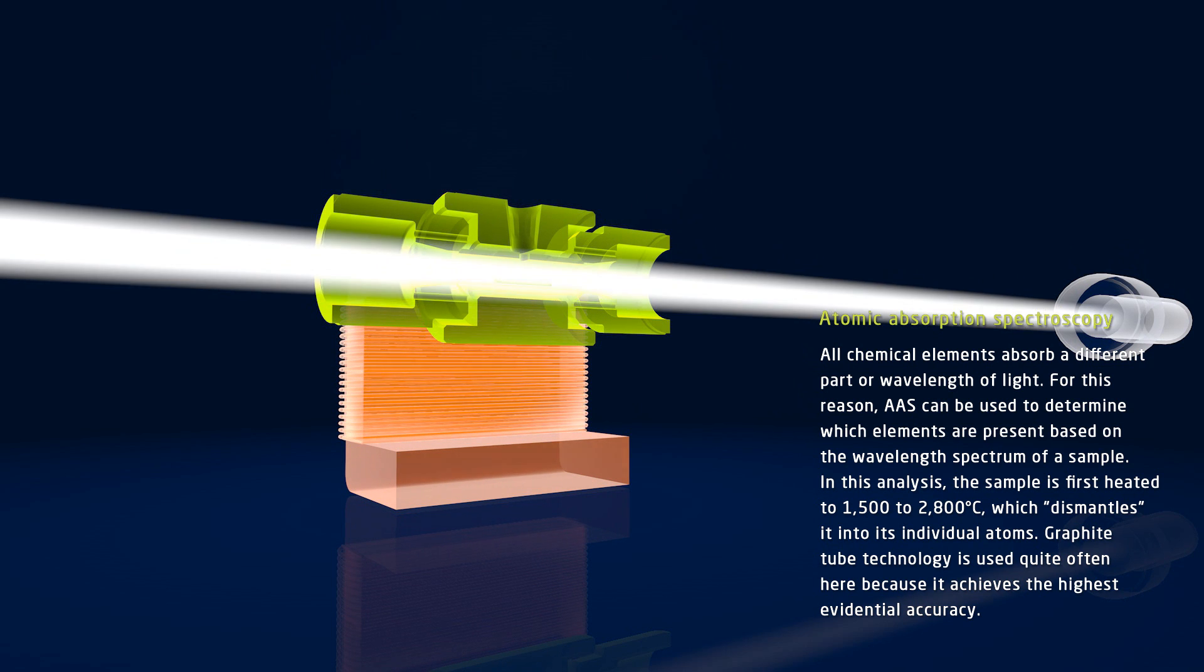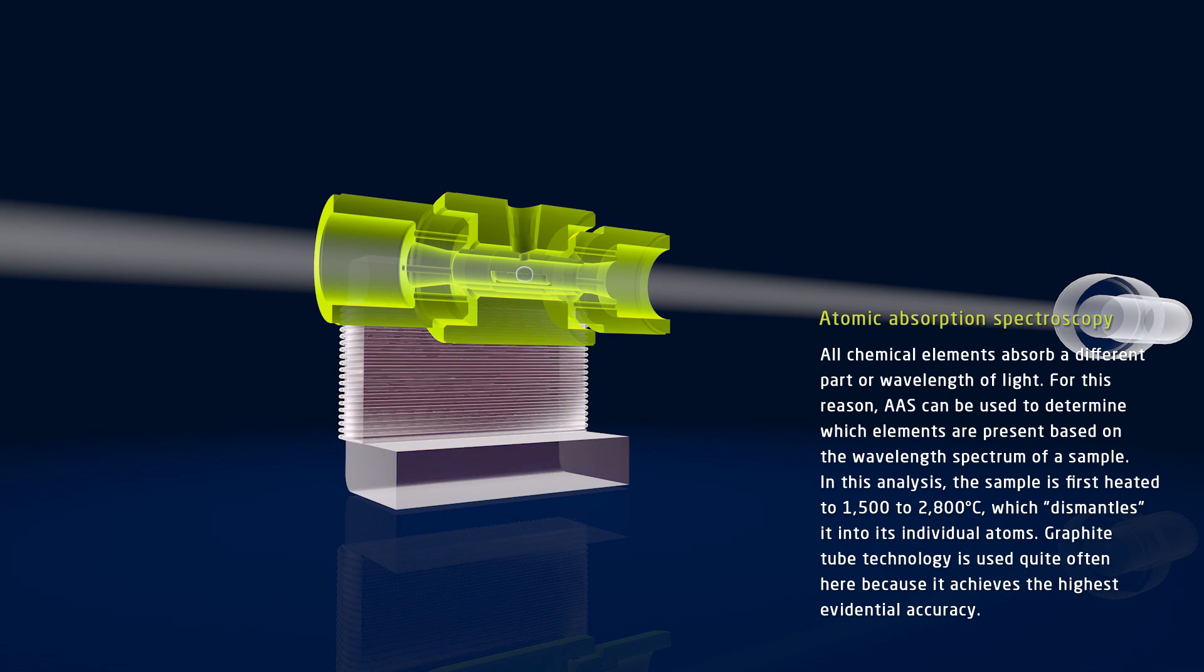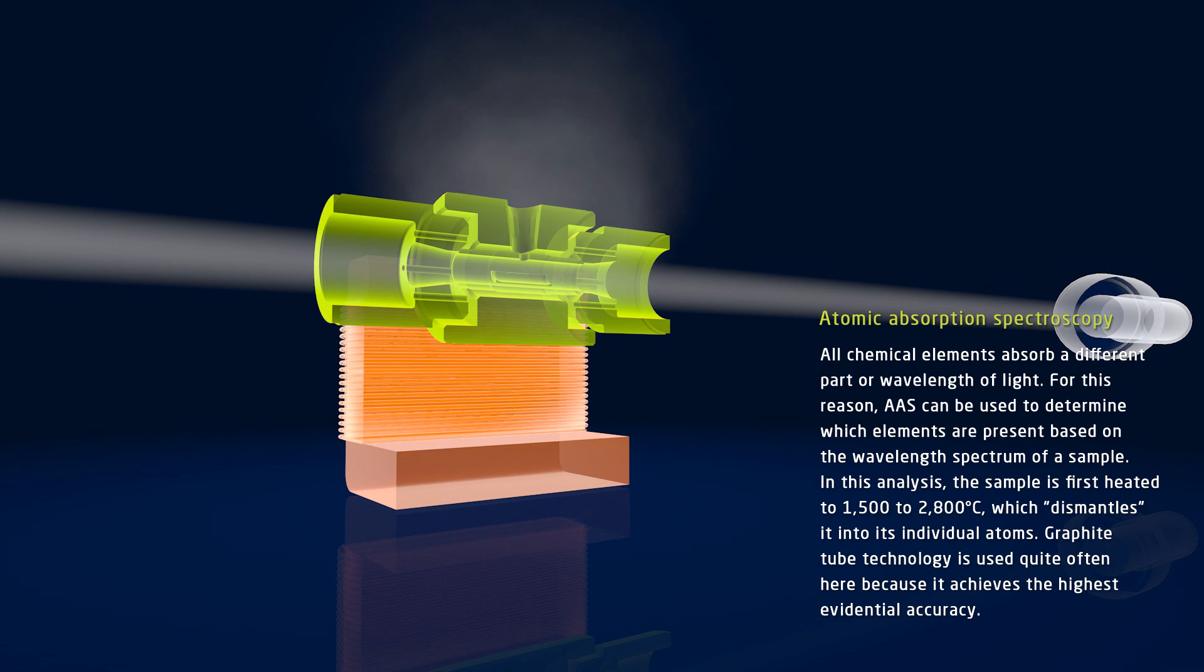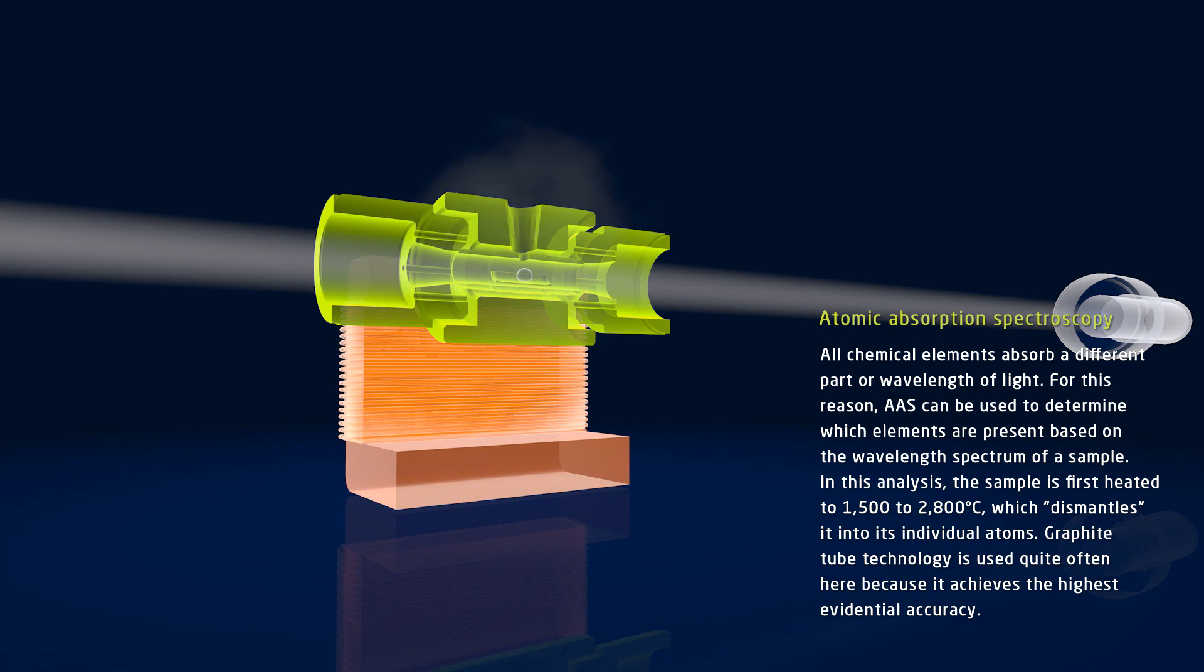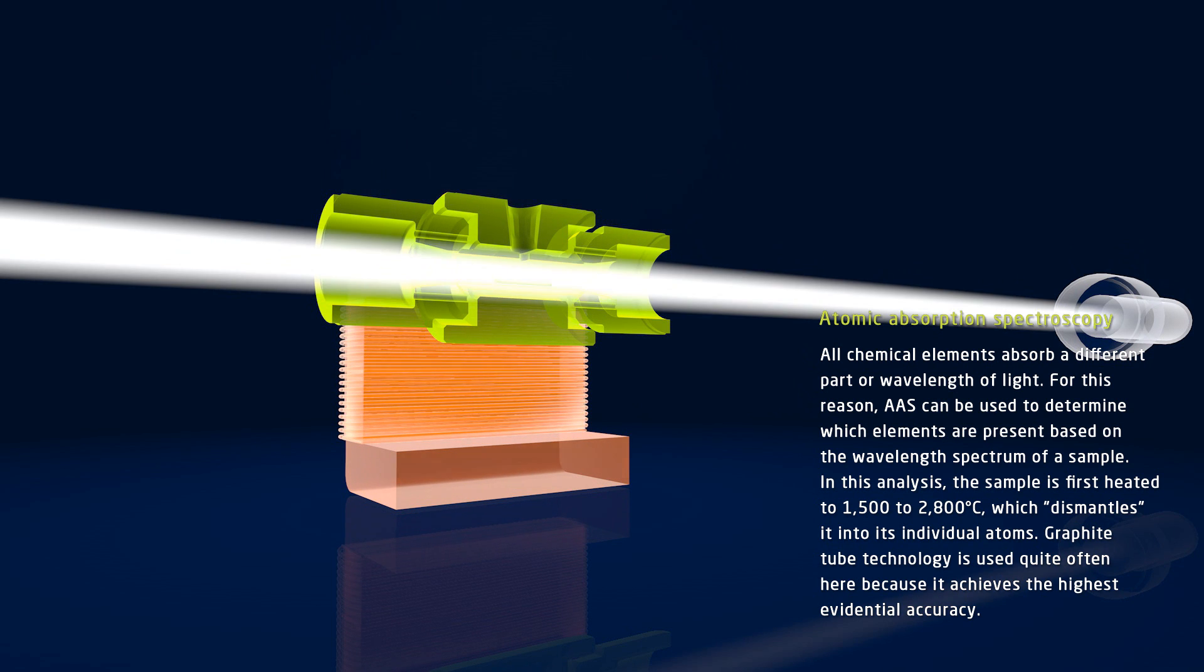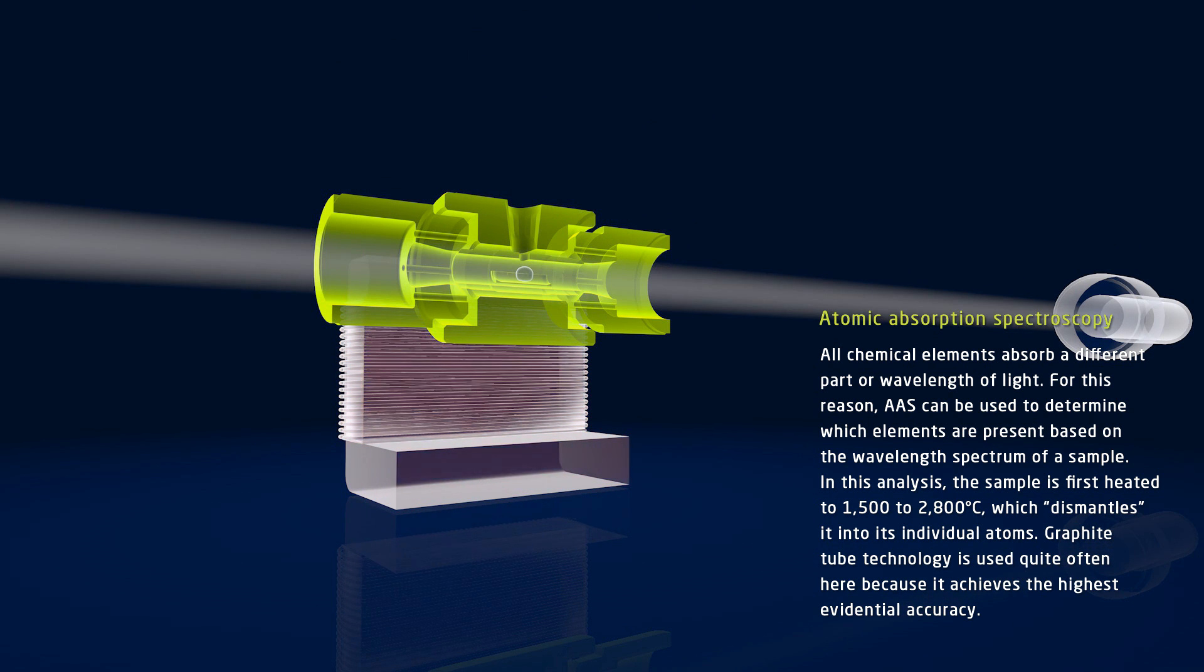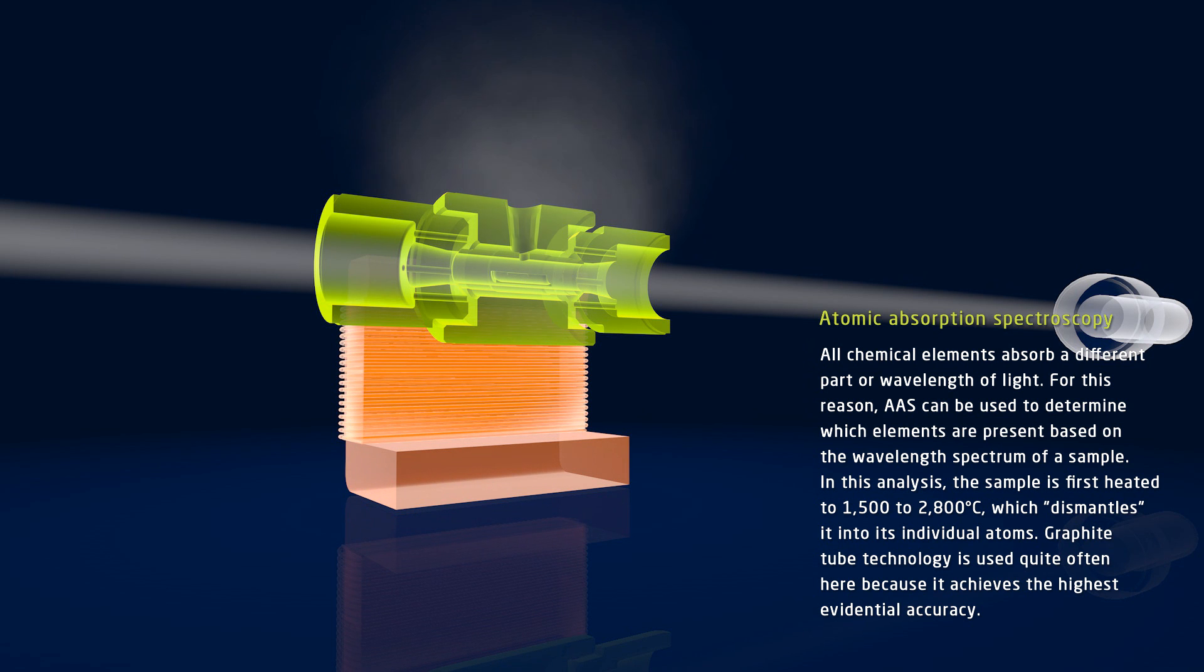To perform the analysis, the sample is first heated to 1500 to 2800 degrees Celsius, which dismantles it into its individual atoms. Graphite tube technology is used quite often here because it achieves the highest evidential accuracy.